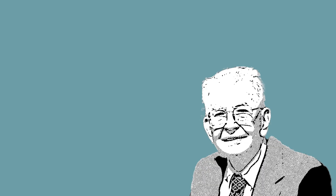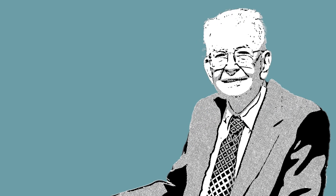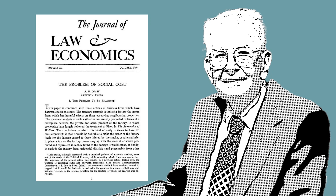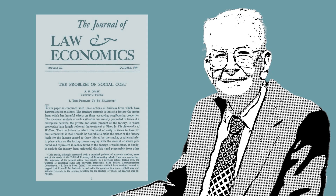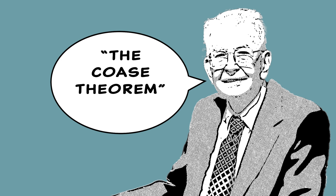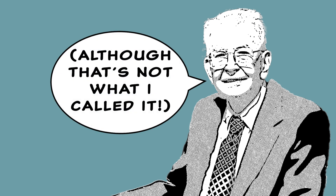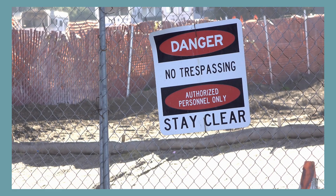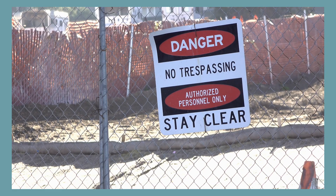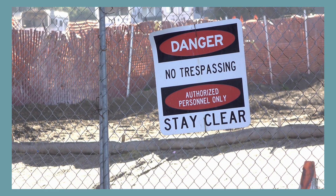In 1960, future Nobel Prize winner Ronald Coase wrote The Problem of Social Cost. As law review articles go, this is a famous one. It introduced the Coase theorem to the legal lexicon, and it's notable for the non-intuitive argument that sometimes having clear property rights might matter more than who gets to control certain property interests.